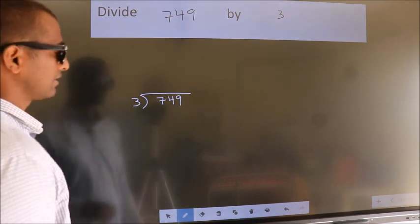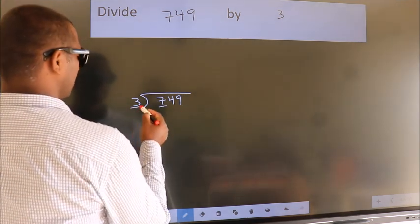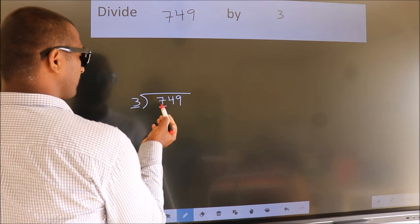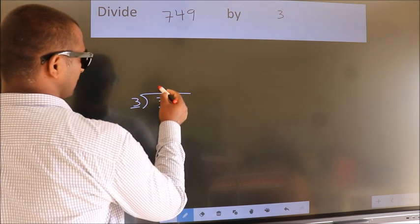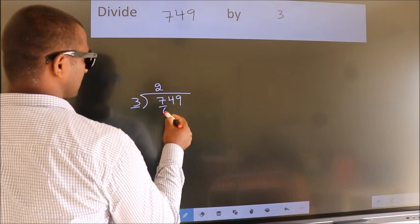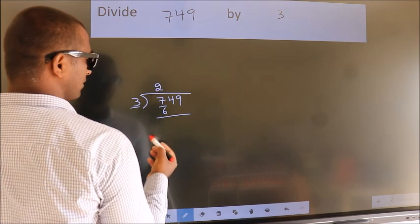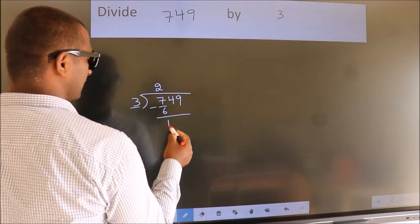Next, here we have 7 and here 3. A number close to 7 in the 3 table is 3 times 2 equals 6. Now we should subtract. We get 1.